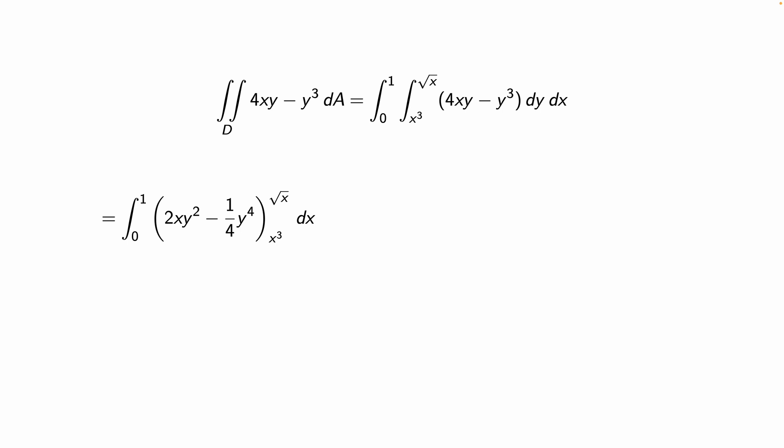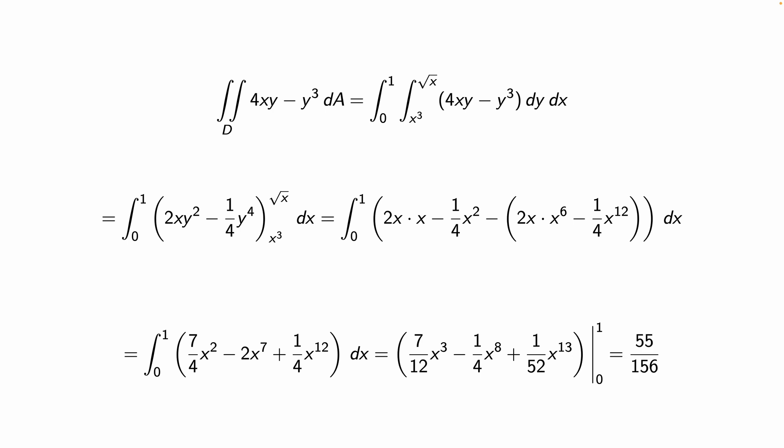And then plugging in our two endpoints, root X and X cubed, we get this mess here. And simplifying gives us this guy down here. And finally, now we have a standard integral of a polynomial that I'm sure you guys can solve. And we see that the area of this D ends up being 55 over 156. And yeah, we're done.